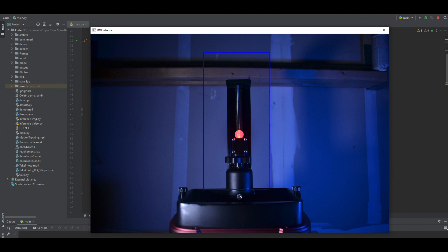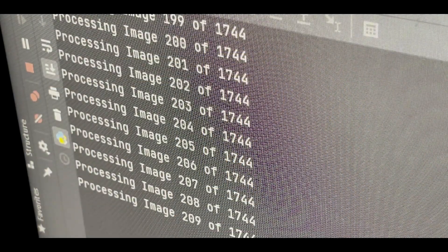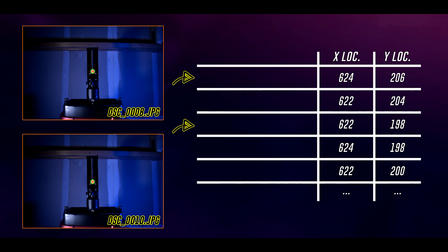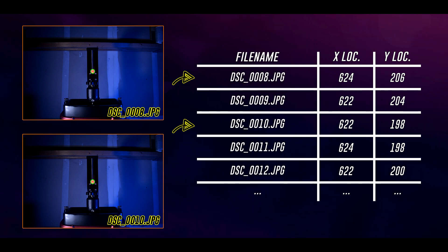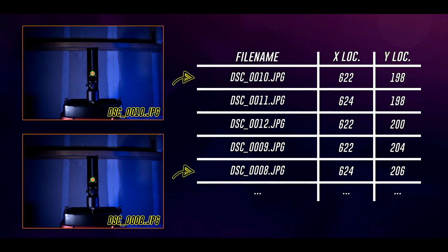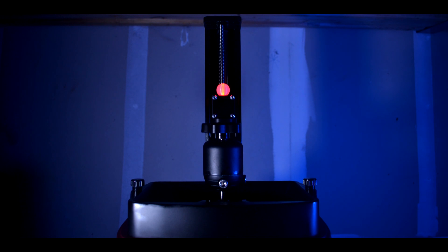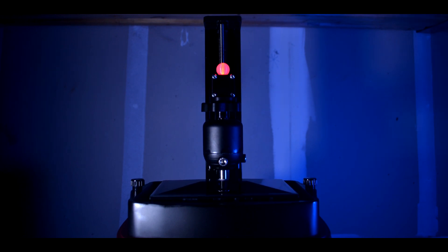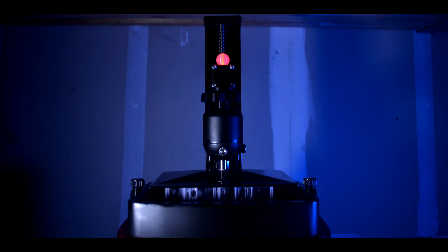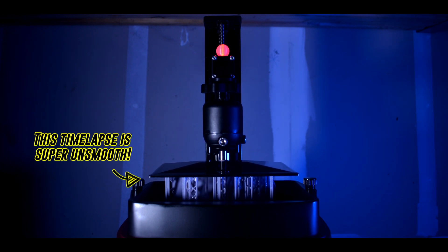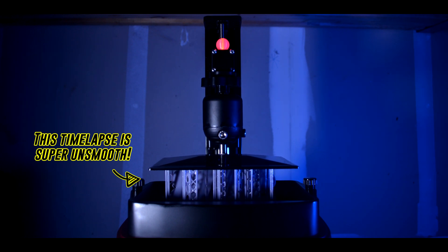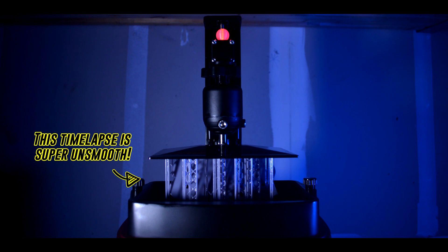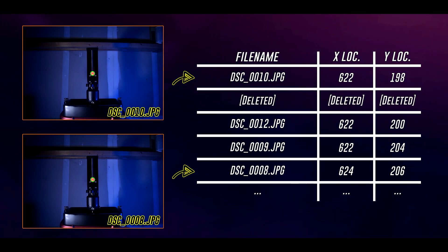After selecting the region of interest with the mouse, the code iterates through each folder in the Frames directory and saves the XY location for each circle it found along with its corresponding filename into an array. Rows of the array are then sorted so that the Y location of the circle always increases, leading to a sequence where the print bed never appears to move down. To handle cases where multiple images share the same circle Y location, the code keeps only the first image at each Y position and deletes the rest, since it won't be possible to tell when a photo was taken if the lighting conditions remain consistent.